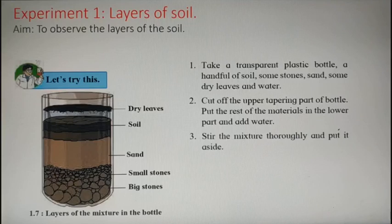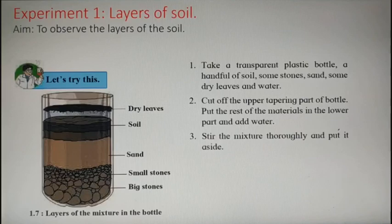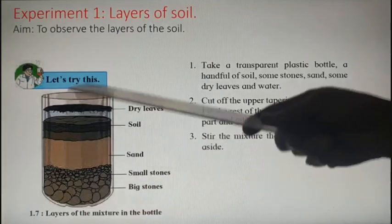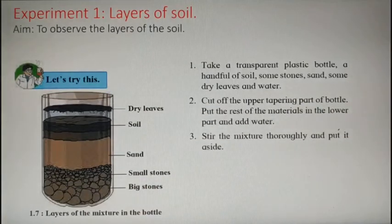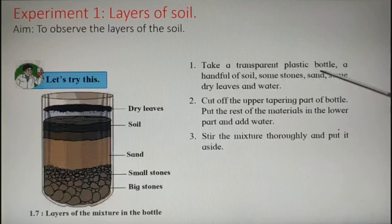What you have to do is cut off the upper tapering narrow part of the bottle. You can see the diagram here. In that bottle, you have to put all the materials - a handful of soil, some stones, sand, some dry leaves - and add water.